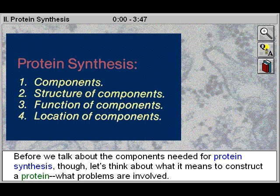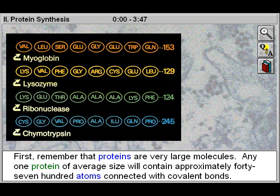Before we talk about the components needed for protein synthesis, let's think about what it means to construct a protein and what problems are involved. First, remember that proteins are very large molecules. Any one protein of average size will contain approximately 4,700 atoms connected with covalent bonds.